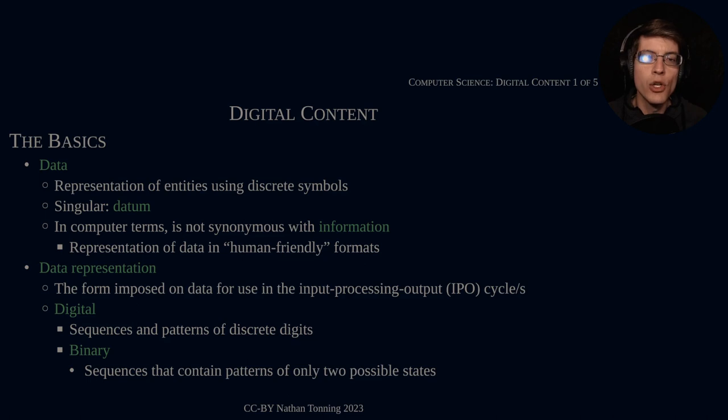Information in a computer context is the representation of data in human-friendly formats. For instance, I am displaying these notes here on a PDF—a PDF would be a human-friendly format. If I open up the PDF in vim, the text editor, what I see is the non-human-friendly form. Usually data is what computers will work on and information is what humans can understand and interact with.